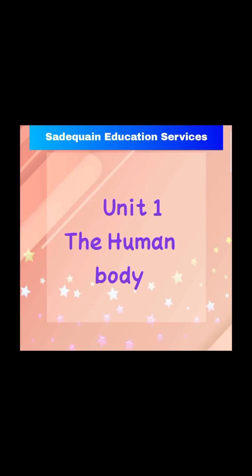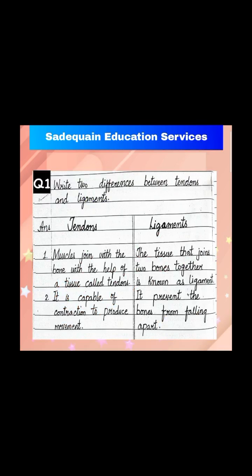First of all, make a title page for unit 1, the human body. Then, in front of that page, make a title on a blank page. After that, write down the date and homework, and write question number 1.